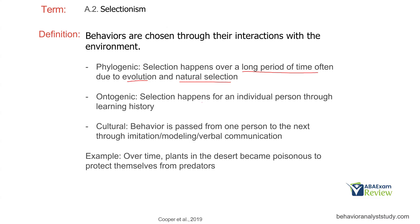When we think individual learning history — which is what we as analysts typically deal with — we think ontogenic. Selection happens for an individual through their learning history. Each of us has our own individual learning history that shapes who we are today. When we change behavior, we're thinking from the perspective of that individual's own learning history. Then there's cultural selection, where behaviors pass from one person to the next through imitation, modeling, and verbal communication.